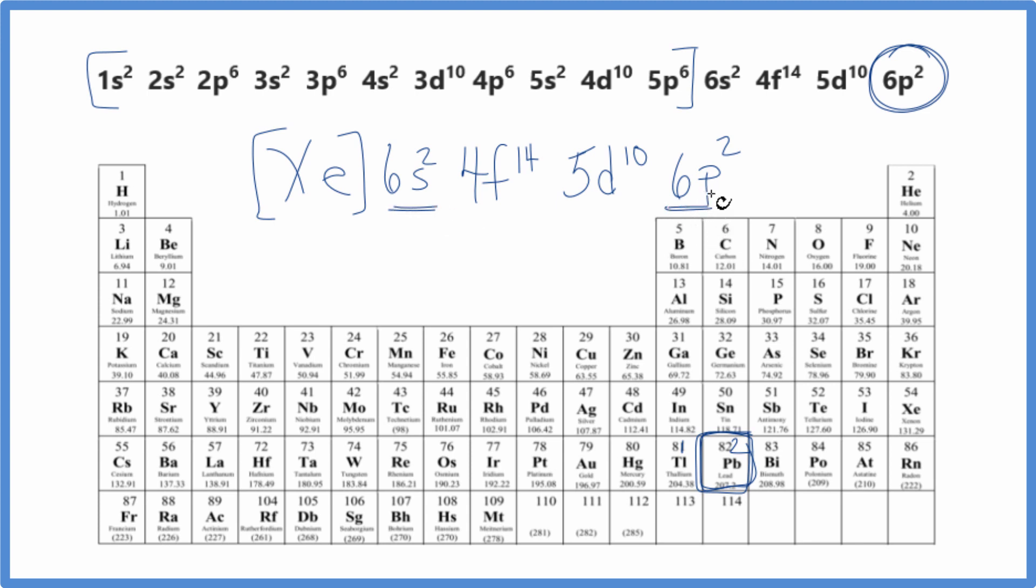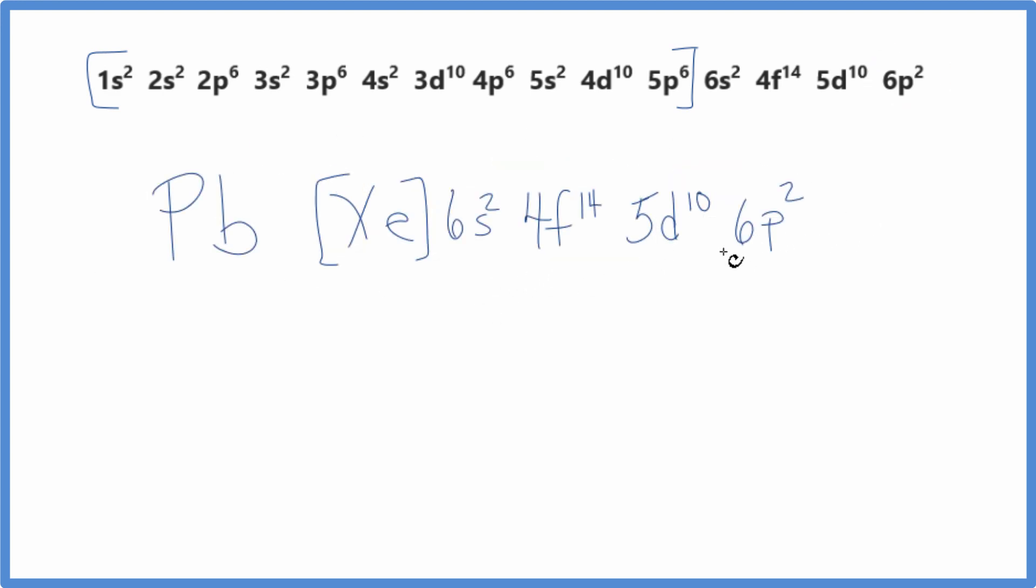Let's look at the lead-2 and lead-4 ions. So this is the electron configuration for lead in condensed notation. Let's copy that to do lead-2. So to get lead-2, that 2+, Pb2+, that electron configuration, we need to lose two electrons.